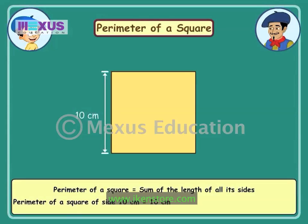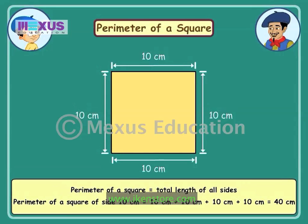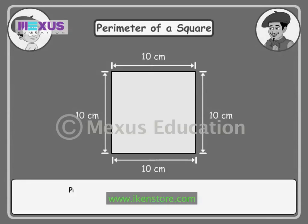Here it will be 10 plus 10 plus 10 plus 10 plus 10, giving 40. That's right. But there's a quicker way of finding the perimeter of a square as well. Since all the sides are equal, instead of adding all the sides, we can multiply the length of one side by 4.